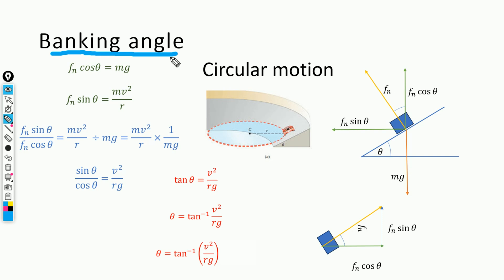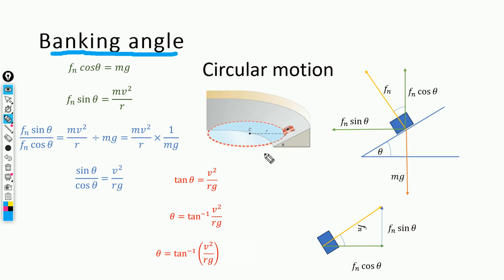When a car is taking a turn on a circular road — or a curve, which can also be considered as a circular path — the tires of the car provide the centripetal force. However, in some areas such as regions with heavy snowfall or in mountains, the turns are very short and the frictional force is not enough to make the car take a turn in a circular path.